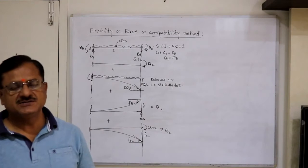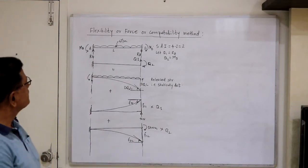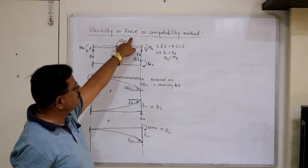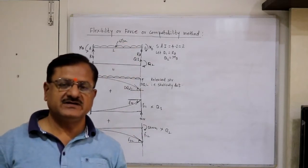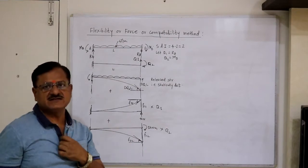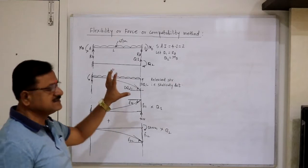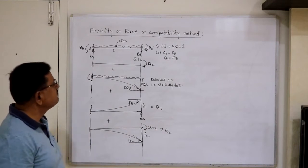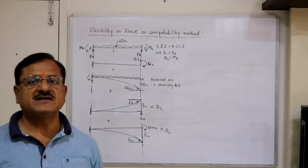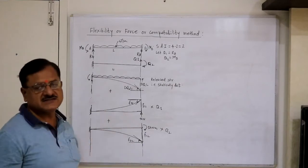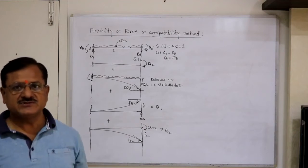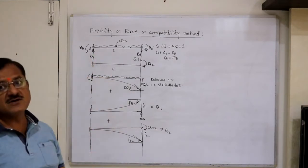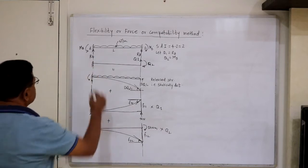This is our second lecture on flexibility and stiffness method. The flexibility method is also called the force method or compatibility method. We call it the force method because we consider forces as unknowns — that is, support reactions — and the force may be a reaction or a moment. It is called the compatibility method because we use compatibility equations at the supports to find these unknown forces.